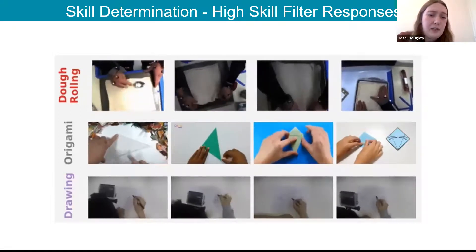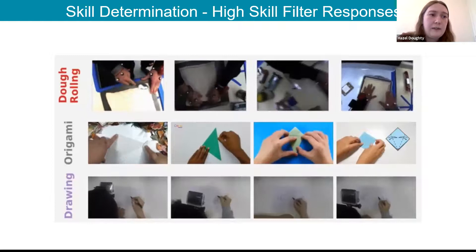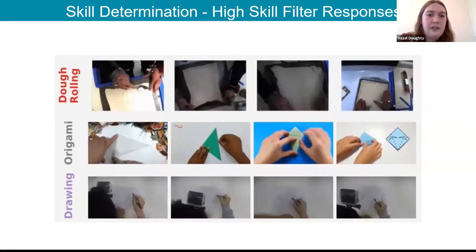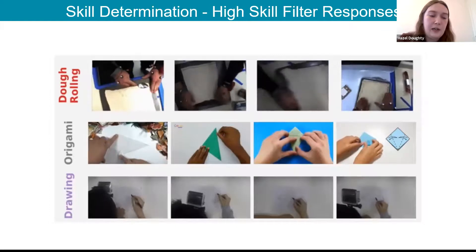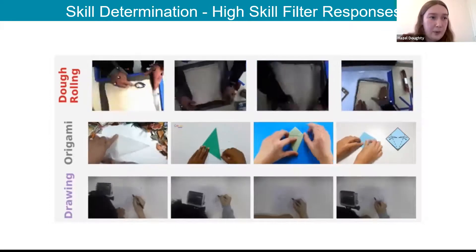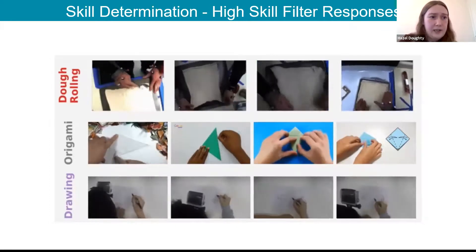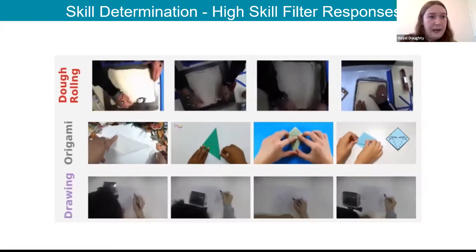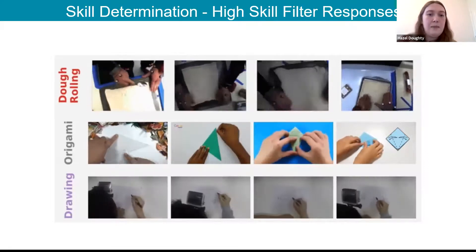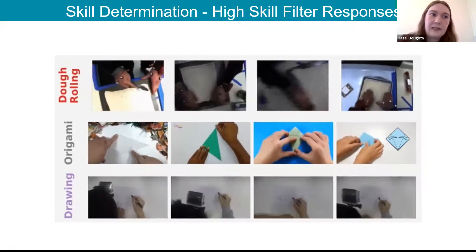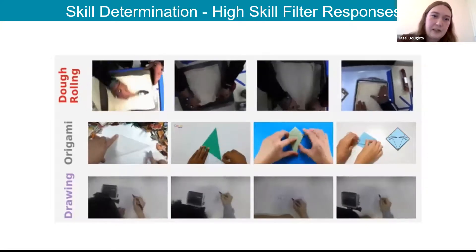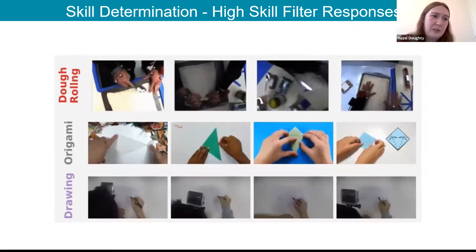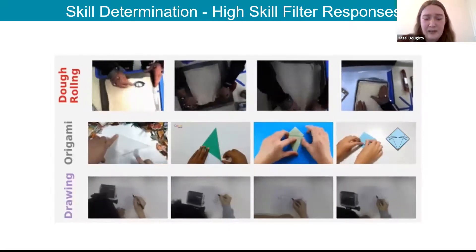Sharing features between tasks remains an open challenge. Currently, models are trained and tested separately for each task, limiting scalability. An additional complication is that features indicating skill can conflict across tasks — hesitation during drawing indicates thoughtful planning and is a sign of high skill, but in other tasks hesitation would indicate low skill, making cross-task feature sharing very difficult.